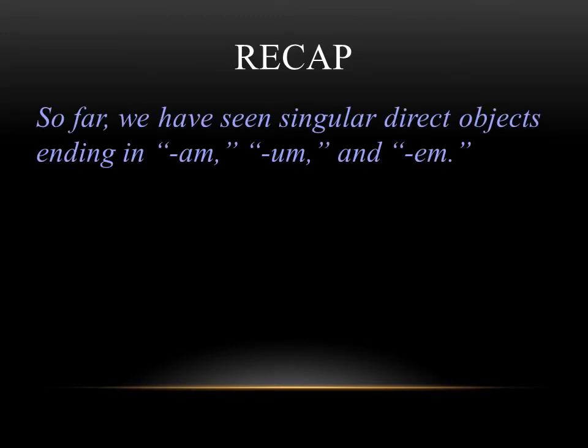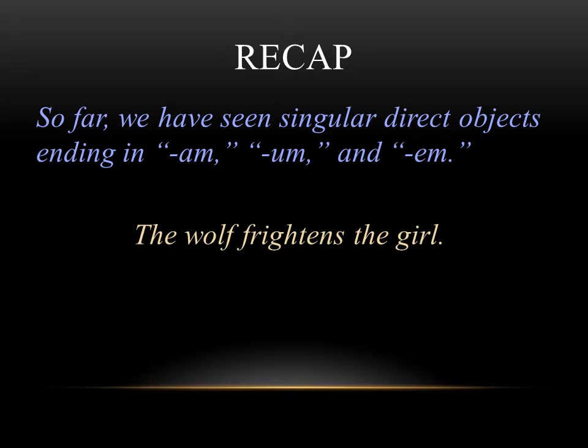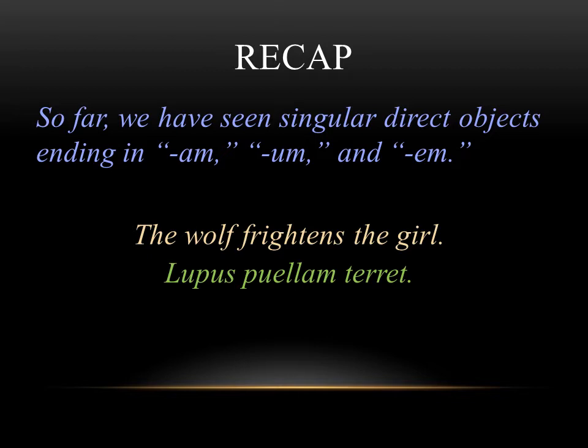So far, we've only seen singular direct objects, and these have ended in -am, -um, and -em. For instance, if you think of the phrase the wolf frightens the girl, we would write that lupus puellam terret. You can see that the word the girl, which is the direct object in this sentence, ends in -am with the word puellam. It means there's one girl, and it's the direct object of the sentence.